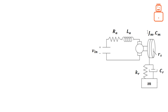Let's work through an example. We want to find the transfer function between the input voltage and the displacement of block M. Block M is connected to the DC motor through a rope, and this rope is represented by a spring and a damper in the model.